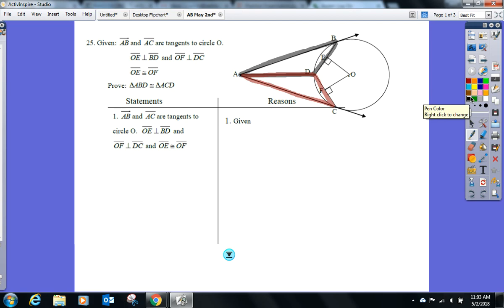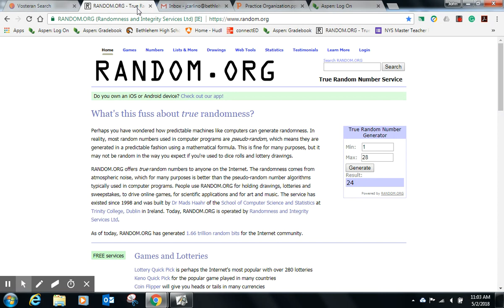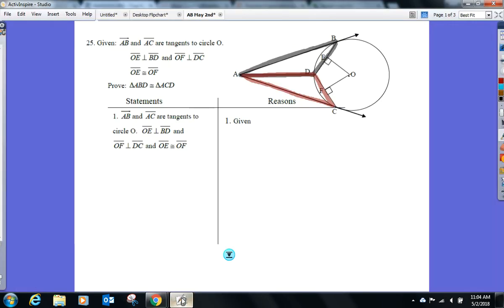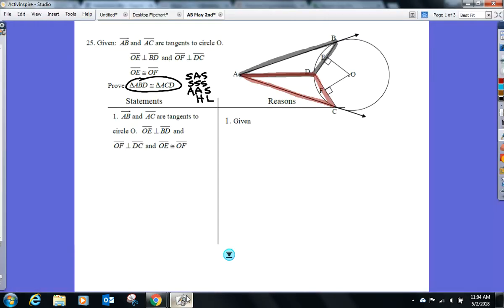A quick review here because it's been a while. Give me as many methods as you can come up with of proving triangles congruent right now, as many methods as you can give me, and then we'll fill in the blanks. What's the missing one?